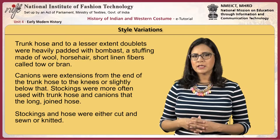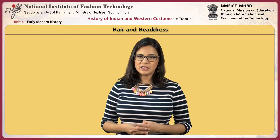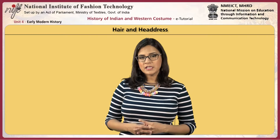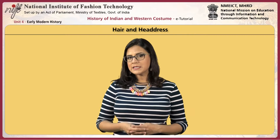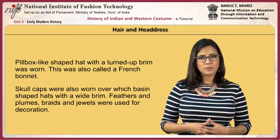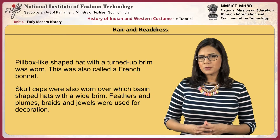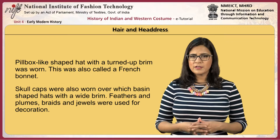At the beginning of the century, men kept their hair ear to shoulder length with a fringe of bangs across the forehead. By 1530, beards became fashionable and hair was cut short. After the mid-century, men grew their hair longer and beards and moustaches remained popular. A pillbox-shaped hat with a turned up brim was worn, also called a French bonnet. Skull caps were also worn, as were basin-shaped hats with a wide brim. Feathers and plumes, braids and jewels were used for decoration.